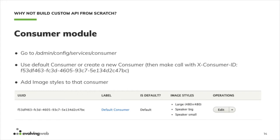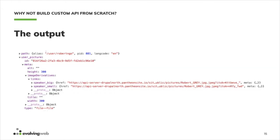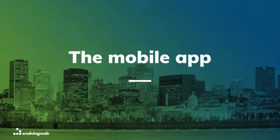The output of all this setup will look like this. By default, JSON API will not give you the speaker_big and speaker_small image links. But with all the setup done, it will give you those links, and you can use them in your application without blowing up the data. Let's go to the second part, which is the mobile app.